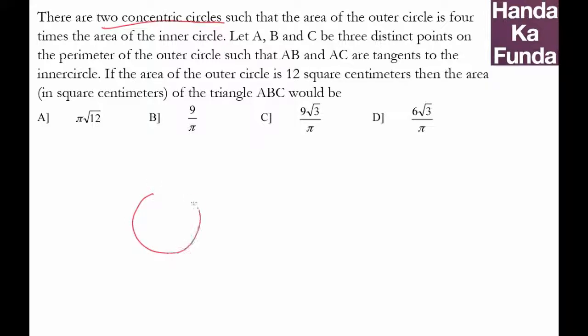What does that mean? That if the inner circle has radius r, the outer circle must have a radius of 2r because only then the area will be four times.